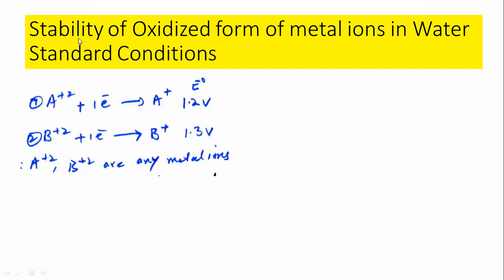We are discussing the stability of the oxidized form — only this form we are going to consider, and later we will move to the reduced form as well. My question is: if you are going to consider the stability of the oxidized form of these metal ions in water, what would be the half cell of water you have to consider to check the spontaneity of these metal ions in water?